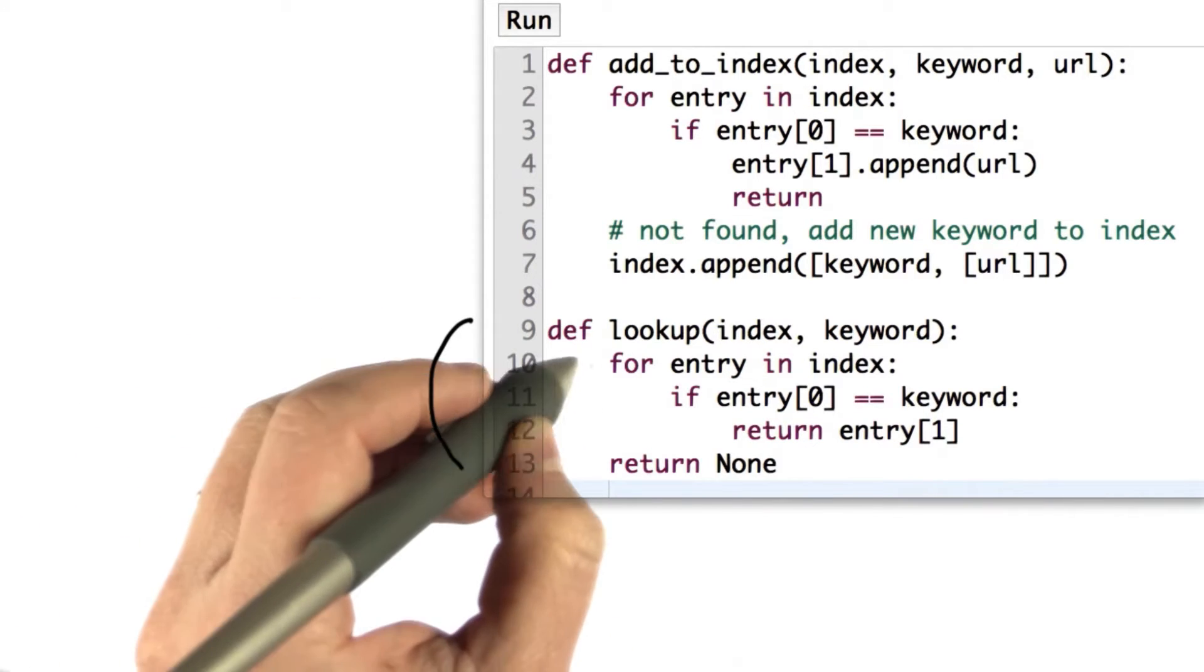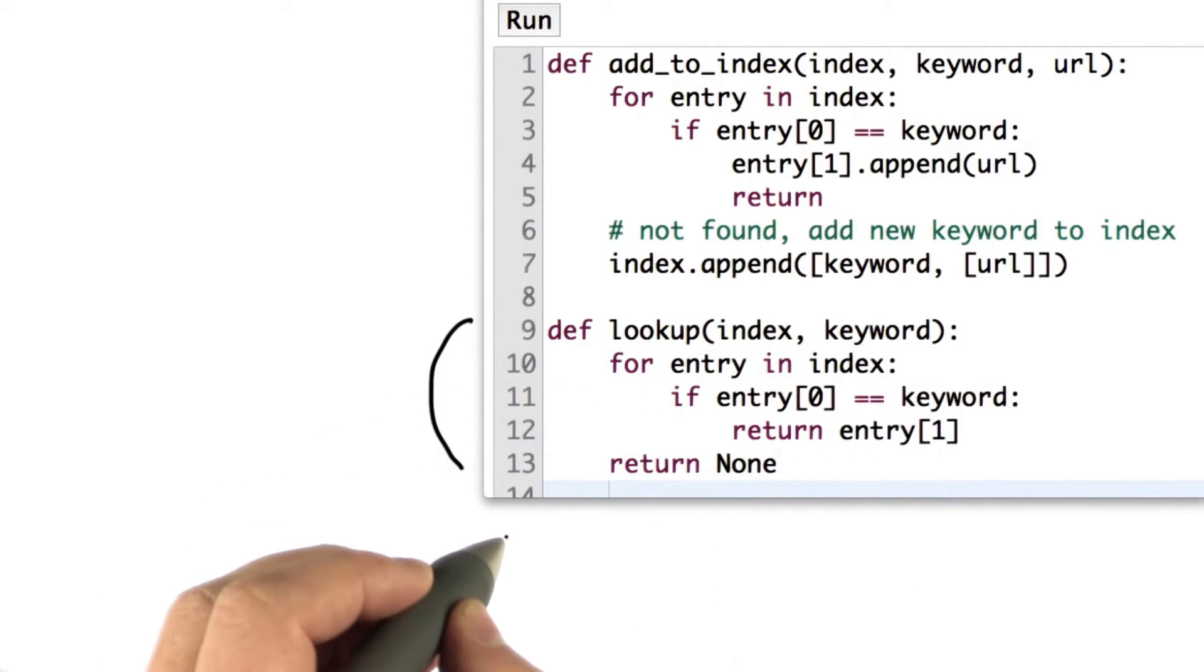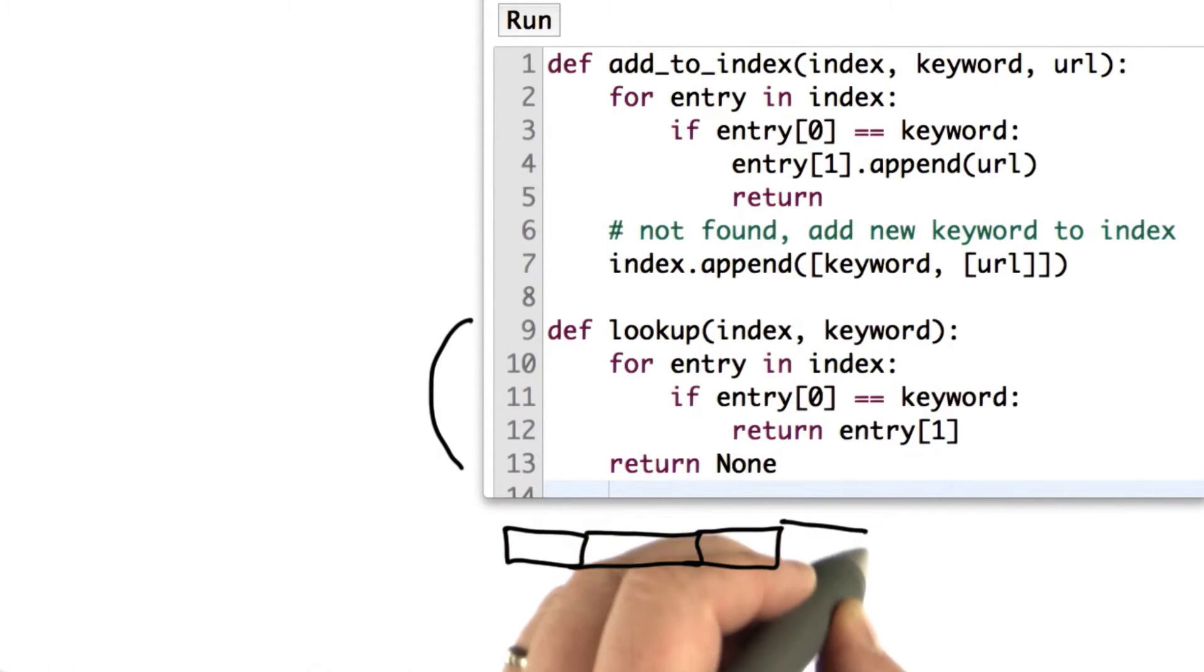So what lookup is doing, it's going through a loop, each of the entries in the index. Remember that the index is a list, so it's going through that list. For each element, it's checking does it match the keyword.